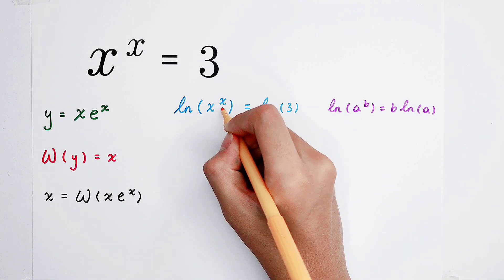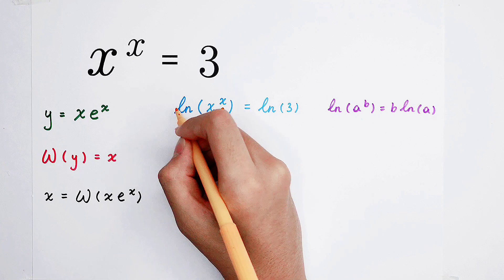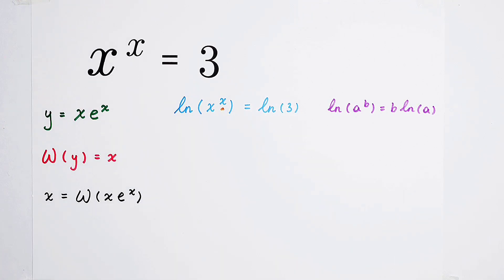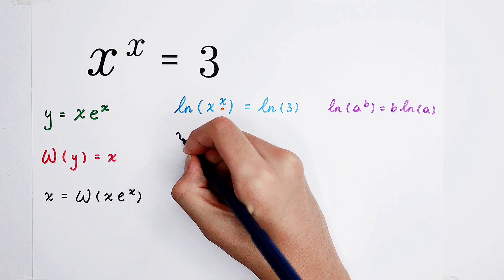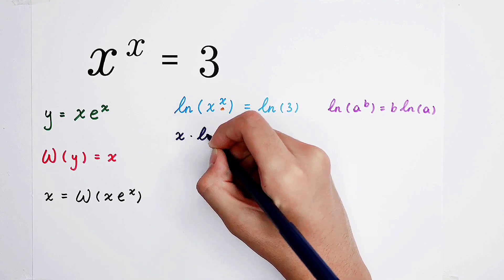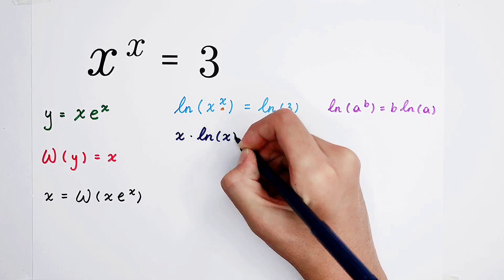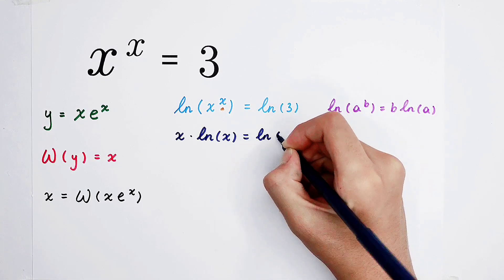So this x from the exponent can jump out from this natural log. So here it can be written as x times the natural log of x equals the natural log of 3.